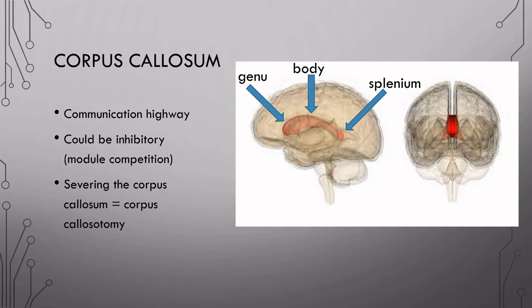It's broken up into three parts. The most anterior is called the genu. The middle is called the body. And the posterior part is called the splenium.